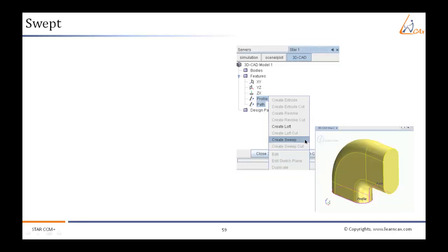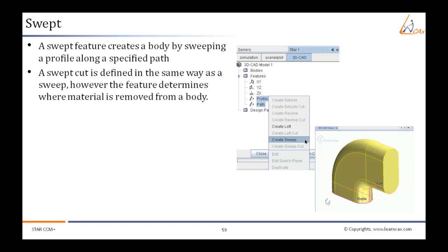Swept is another feature which creates a solid body. The sweep feature simply sweeps a 2D sketch along a path we input. The volume swept is converted to a solid body. For the sketch that is swept, we use one sketch and for path we use another sketch.